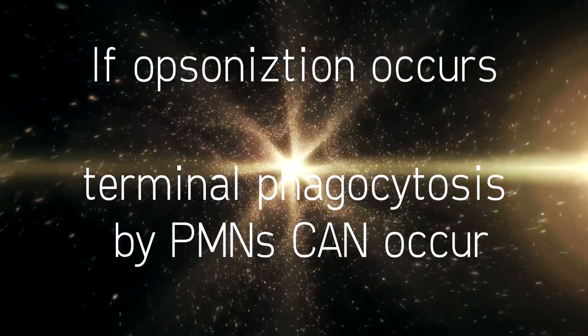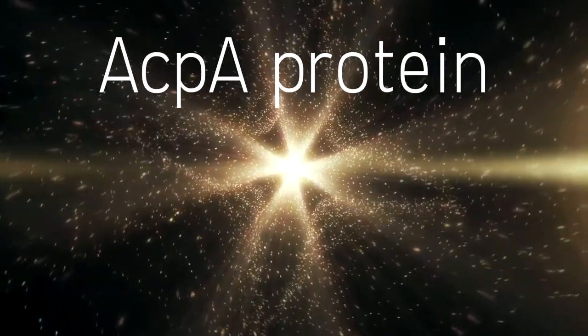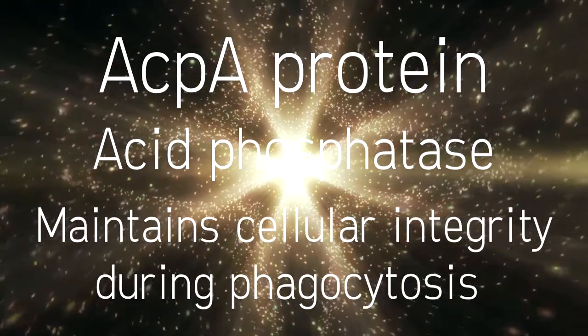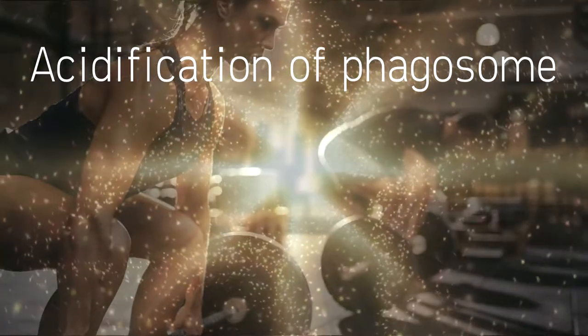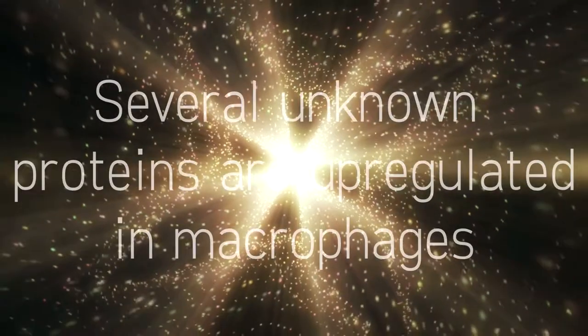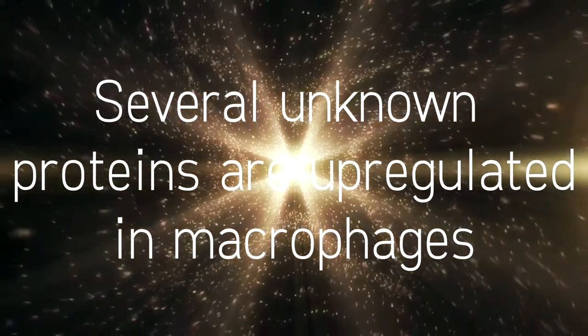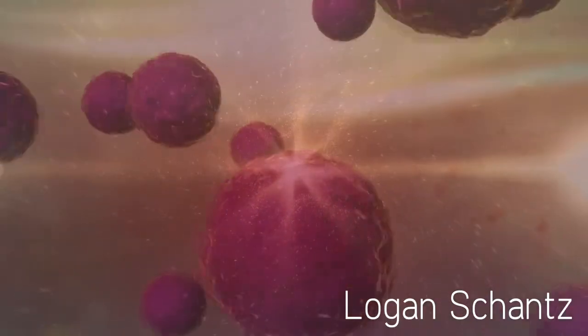Polymorphonuclear leukocytes can kill the bacteria by oxidative burst. The AcpA protein in Francisella tularensis, with acid phosphatase function, plays an important role in the inhibition of respiratory burst. Once within the macrophage, acidification of the phagosome is essential for growth and iron acquisition. There are also several proteins that are upregulated within the macrophages, but their specific functions in intracellular survival remain elusive. After macrophage growth, the bacteria induce cell apoptosis and escape to infect other cells.